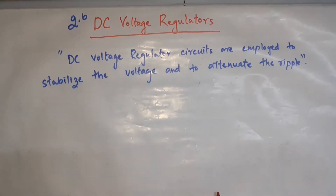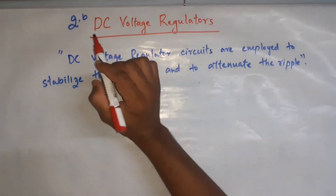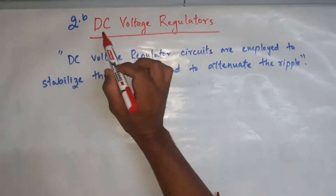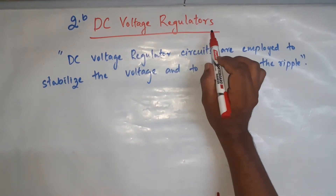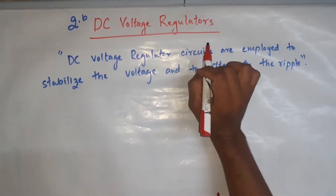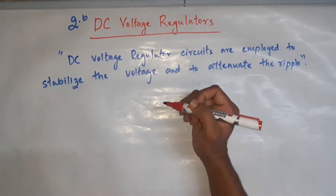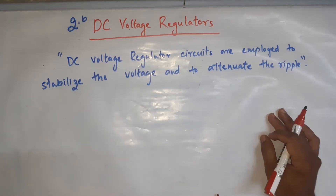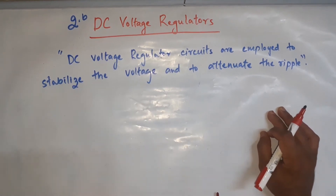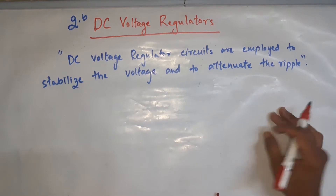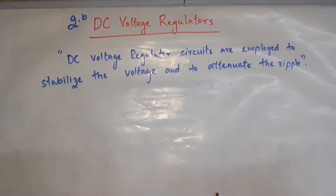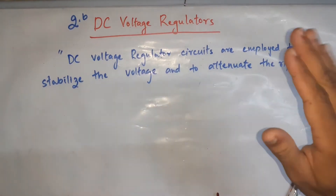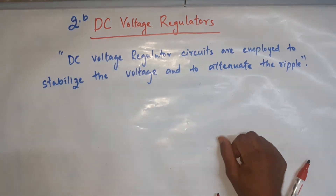Hello students, welcome back for another class. This is from your module 2, the second part. The first part was active filters; the second part will be DC voltage regulators, as per syllabus. A regulator is a system which can have control over your output — it can stabilize, control, and minimize the variation in the input.